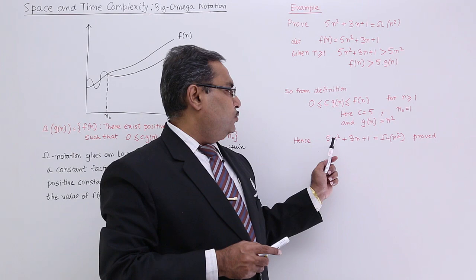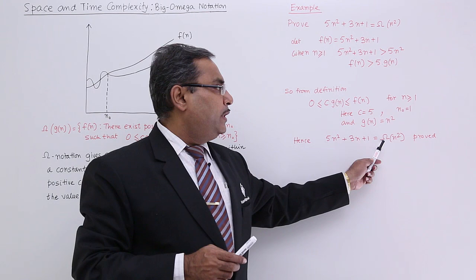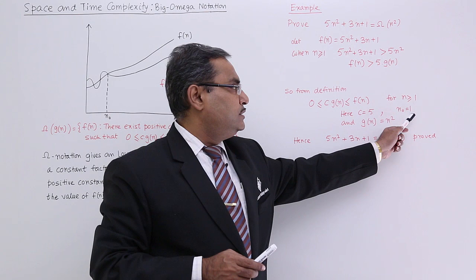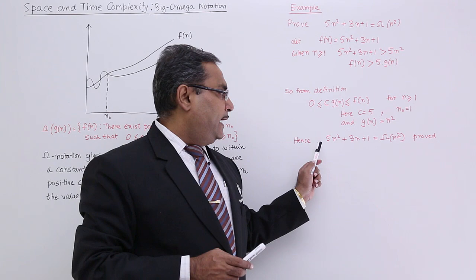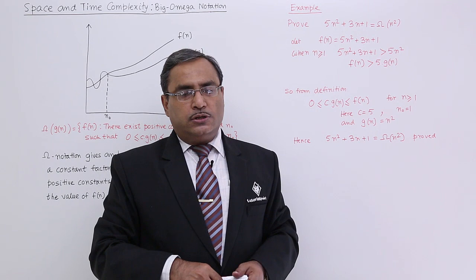We can easily write that big omega of g of n is equal to f of n. That is why I can write that this f of n is equal to big omega of n². Here I have done this: n0 equals 1, c equals 5, and g of n equals n². In this way, hence I can write f of n is equal to big omega of n², and that was asked to be proved. Hence proved.